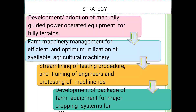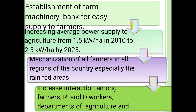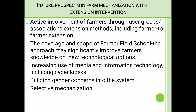Strategy: development or adoption of manually guided power-operated equipment for hill terraces. Farm machinery management for efficient and optimized utilization of available agriculture machinery. Streamlining of testing procedures and training of engineers and testing of machineries. Development of package of farm equipment for major cropping systems. Establishment of Farm Machinery Bank for easy supply to farmers. Increasing average power supply to agriculture from 1.5 kilowatt per hectare in 2010 to 2.5 kilowatt per hectare by 2021. Mechanization of all farmers in all regions of the country especially rain-fed areas. Increasing interaction among farmers and R&D workers in Research and Design Department of Agriculture. Future prospects in farm mechanization with extension intervention. Active involvement of farmers through users groups. Association extension methods including farmer-to-farmer extension.